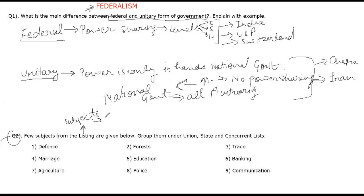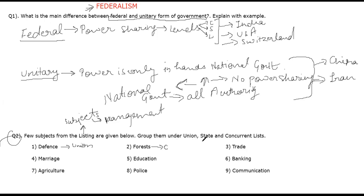Whether it will be controlled by the state, the union (central) government, or the local level government. The first option is defense — defense of India is controlled by the union government, meaning the central government. The second one is forest — forests are controlled by both state and union government, because some forests start in one state and end in another, covering two or three states. So they are under the Concurrent list, controlled by both state and union government.